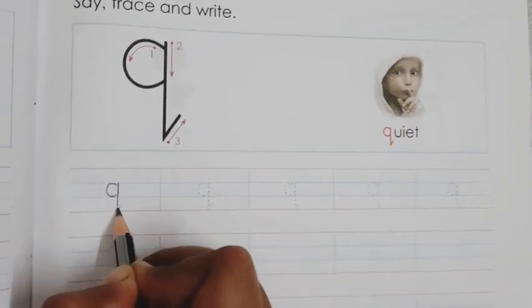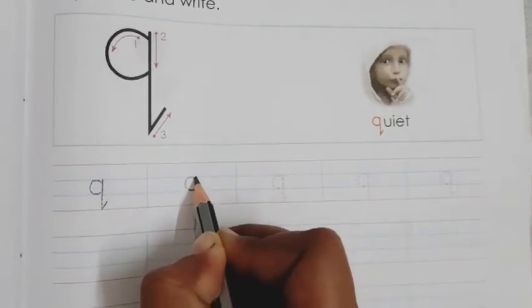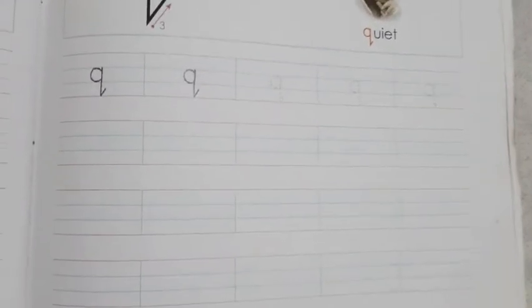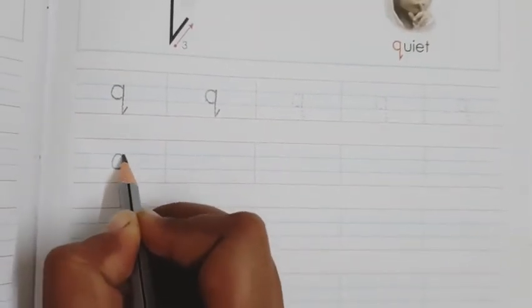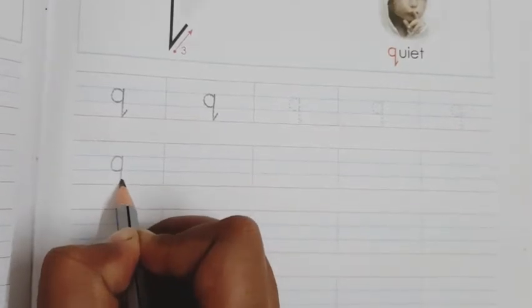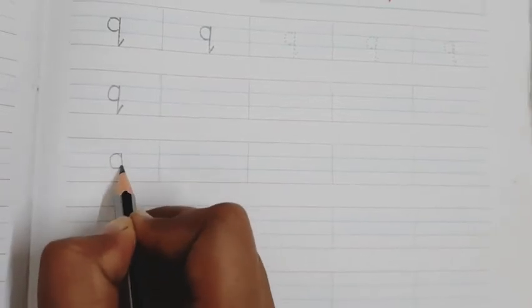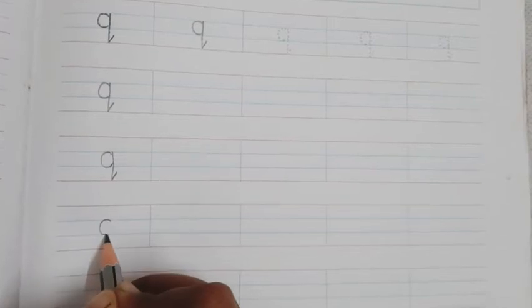Okay, now after doing this we have to write without dots like this. Blue line to blue line, make one standing line and slant line. Blue line to blue line, make one standing line and slant line. Blue line to blue line, make one standing line and slant line. Small letter q.